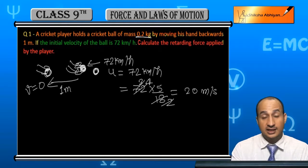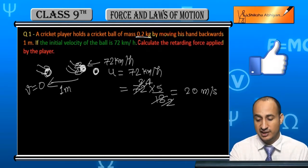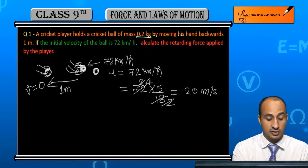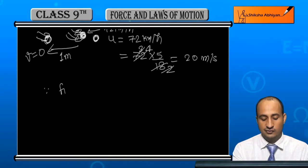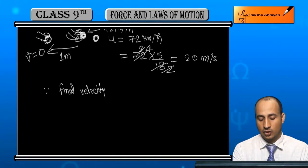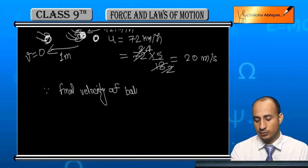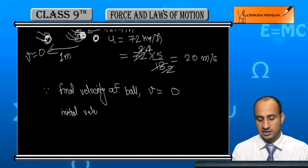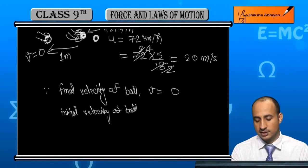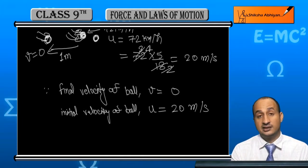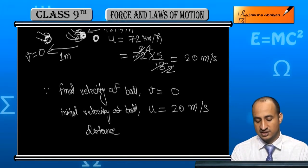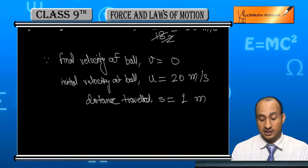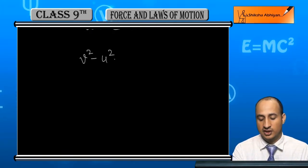Now we need to find the acceleration. The distance traveled by the hand is 1 meter. Using the kinematic equation: V squared minus U squared is equal to 2As.